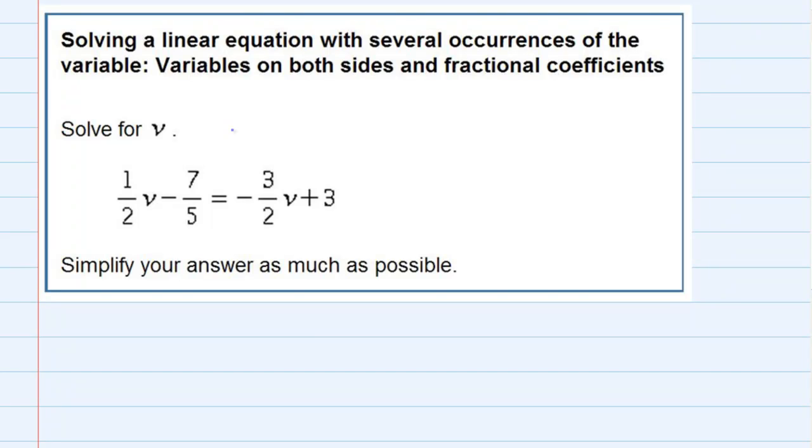Solving a linear equation with several occurrences of the variable, variables on both sides and fractional coefficients. We're asked to solve for V, and as you can see we have a lot of fractions here, and it would be really nice to get rid of those fractions right off the bat so that I didn't have to do any of the calculations with those fractions. And we can do that since it is an equation, has an equal sign.